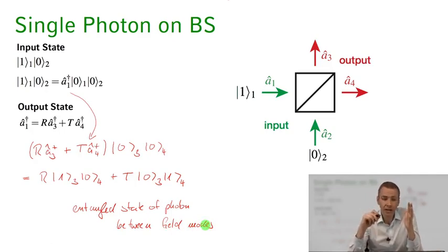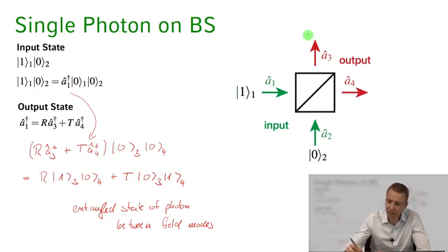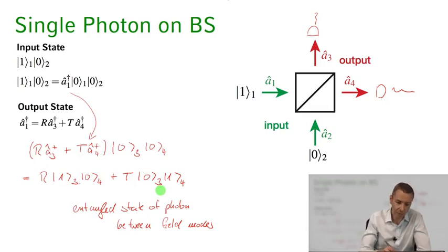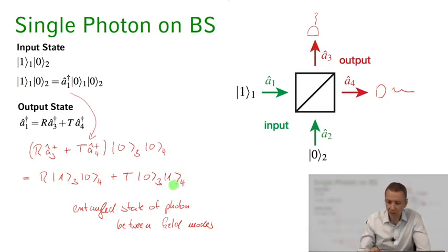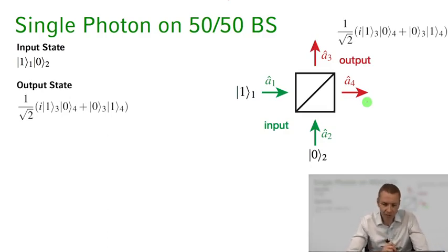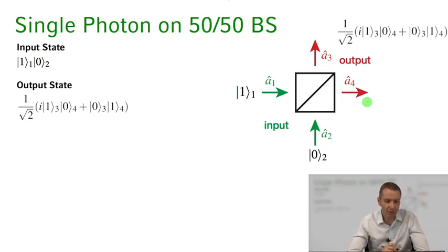When we measure the photon, where are we going to find it? We have a certain probability of finding it in mode 3 or mode 4 — we can place detectors at each output port. When we measure, we either get a click in mode 3 or a click in mode 4. But what do we get on average for this entangled output state?